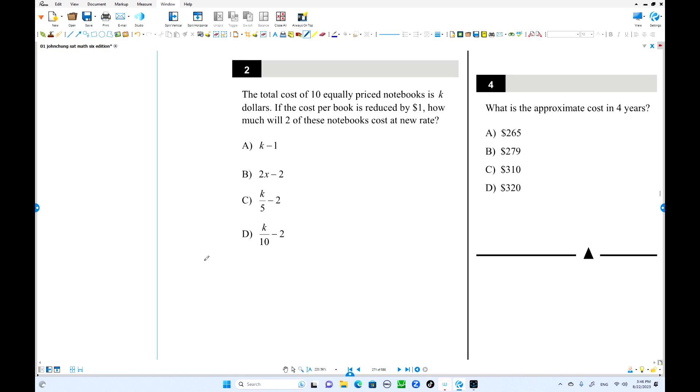Number 2, total cost of 10 equal price notebooks. Each one has the same price. k dollars total, when you divide by 10, that is the price for one book. But the price in the book is reduced by $1, minus 1. That's the new price. Now you're going to find two of these notebooks cost how much? So 2k over 10 is k over 5, minus 2. That is the price for the two notebooks. Choice C is the answer.